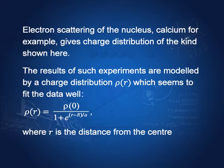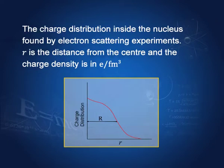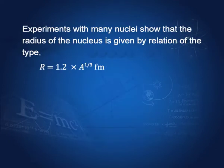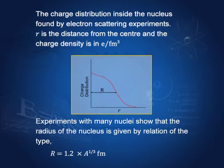The charge distribution is modeled by the equation: ρ(r) = ρ₀ / [1 + e^((r − R)/a)], where capital R is the radius of the nucleus and r is the distance from the center. It can be shown that the radius R equals 1.2 × A^(1/3) Fermi, where A is the mass number. So the data can be fit to this expression: radius = 1.2 × A^(1/3) Fermi.